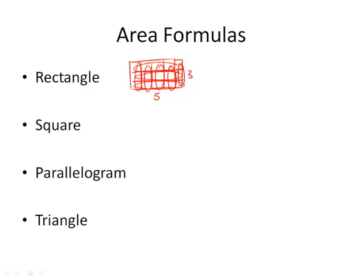Either way, you have three times five, or five times three, fifteen squares filling in the area. Therefore, in general, the area of rectangle with length and width is the length times the width.